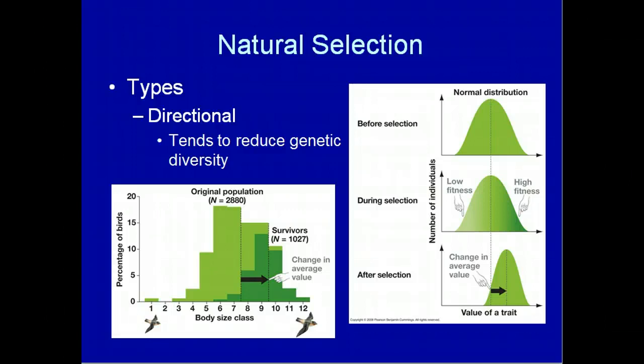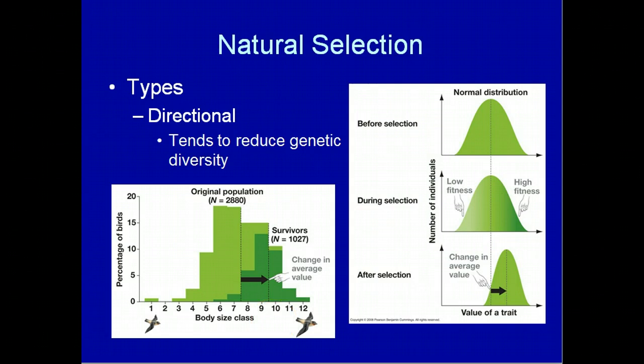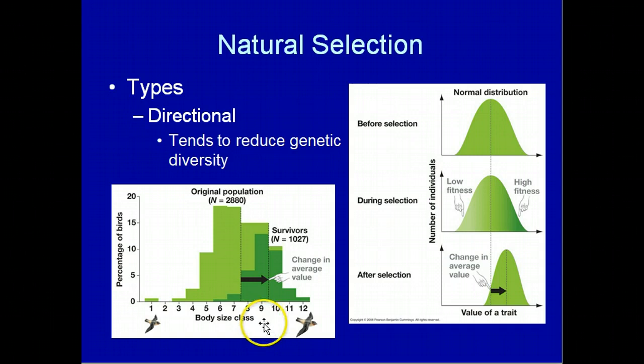The survivors that managed to make it through that cold and rainy season were bigger and had larger fat stores. Here is the original population's distribution of body class sizes, and this is the distribution in the cliff swallows that survived. The mean body class size shifted in one direction — in this case to larger body class sizes — due to this particular change in the environment. This is an example of directional selection.